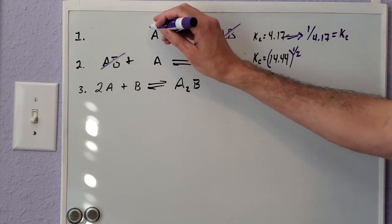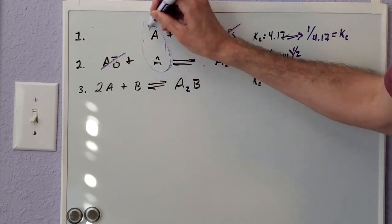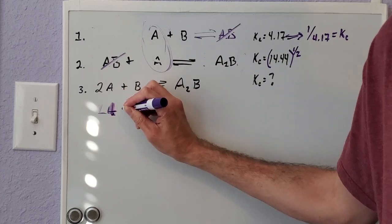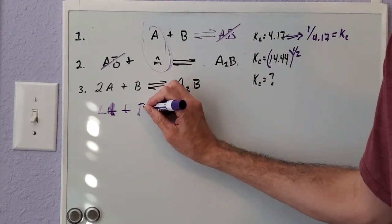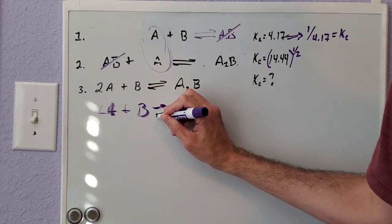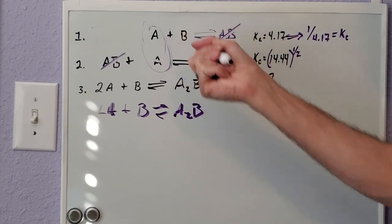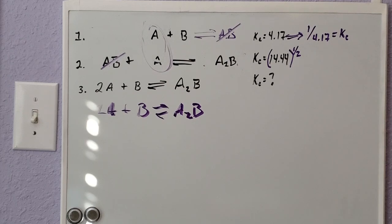Your A2B, assuming it's in the right spot, you have two A's here. Now we have our two A's plus our one B to give us our A2B.